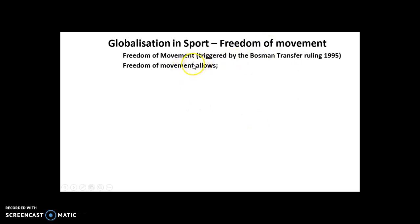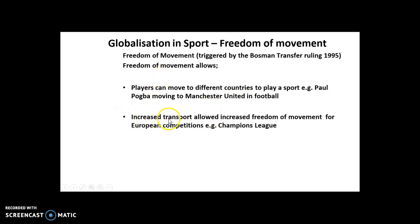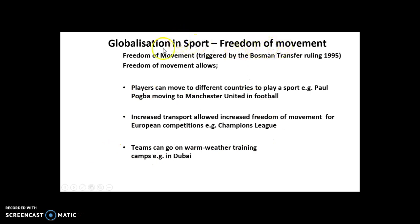This meant that players could now move freely between different European leagues. For example, Paul Pogba moving to Manchester United from Juventus, or the reverse movement — that is freedom of movement at the end of a contract. On top of that, increased transport — particularly air travel — has also enabled the globalization of sport and freedom of movement. You can see this in Champions League football, where transport links allow European teams to compete, such as Liverpool versus Roma.